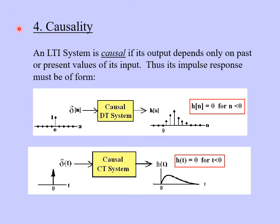The next property is causality, which we touched on briefly in chapter one. An LTI system is causal if its output depends only on past or present values of its input. Therefore its impulse response must occur at or after zero, because the impulse occurs at zero — if the system is causal, the output can't happen before the input arrives. To check causality, verify that the impulse response is zero for everything to the left of zero. Examples of both discrete-time and continuous-time causal systems show the impulse response only going to the right of zero.